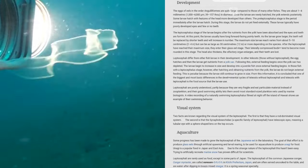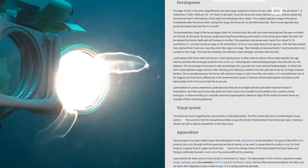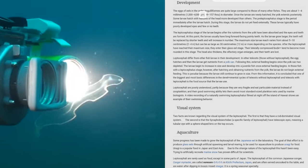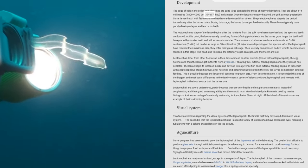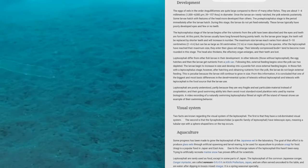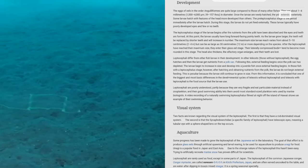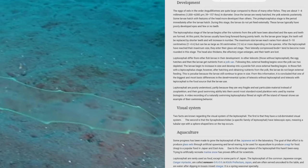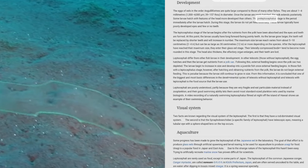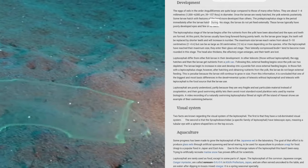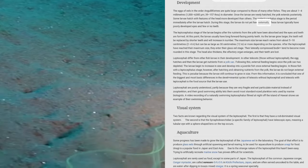The eggs of eels in the order Anguilliformes are quite large compared to those of many other fishes. They are about 1 to 4 millimeters in diameter. Once the larvae are newly hatched, the yolk extends posteriorly. Some larvae hatch with features of the head more developed than others. The pre-leptocephalus stage is the period immediately after the larvae hatch. During this stage, the larvae do not yet feed externally. These larvae typically have poorly developed eyes and few or no teeth.